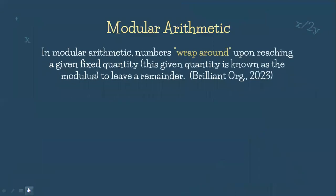In modular arithmetic, numbers wrap around upon reaching a given fixed quantity. This given quantity is known as the modulus to leave a remainder. That is according to Brilliant.org, 2023.